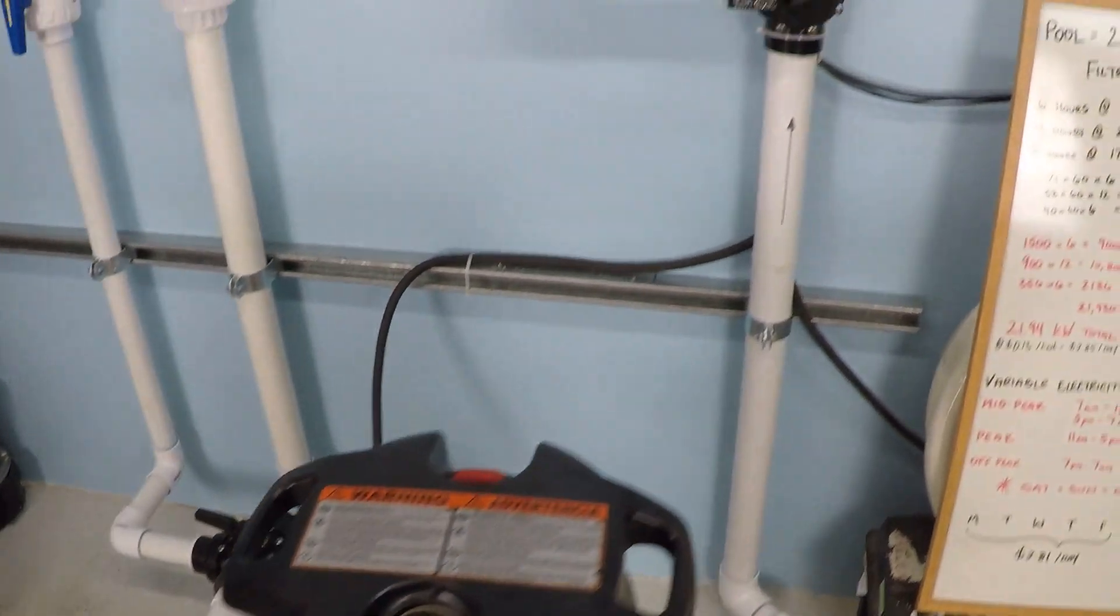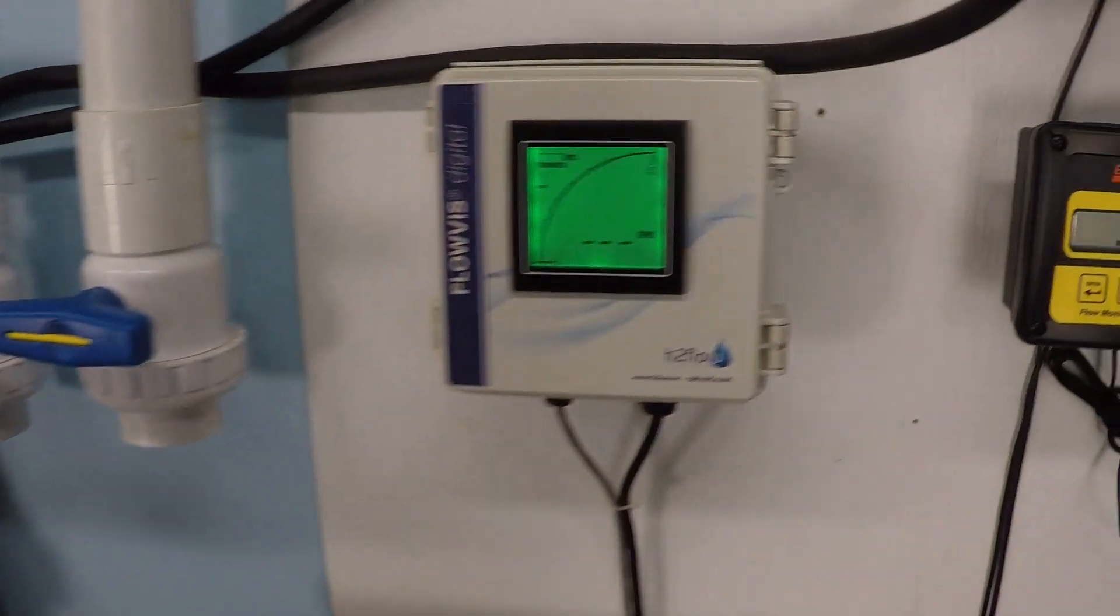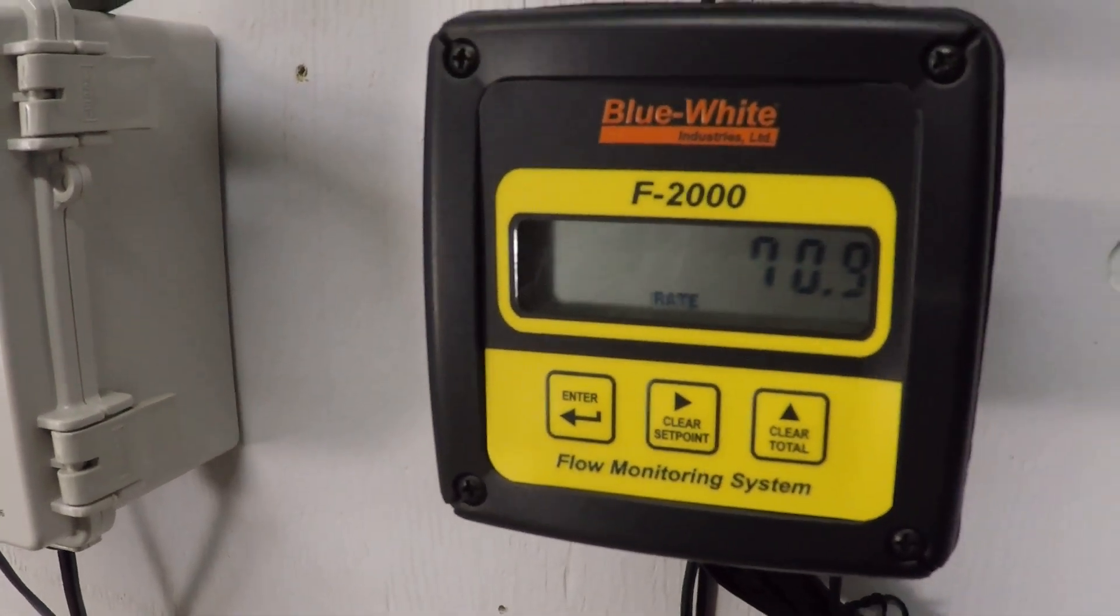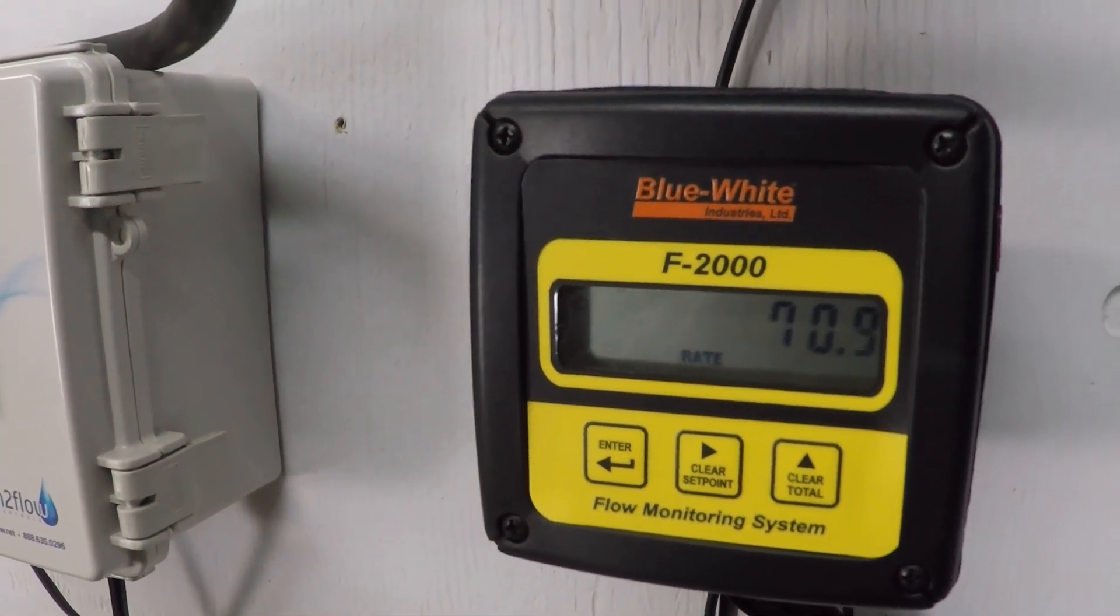So you could also look up on a pump curve and see a flow rate probably right around 71 gallons per minute for this one and a half horsepower superflow variable speed pump.